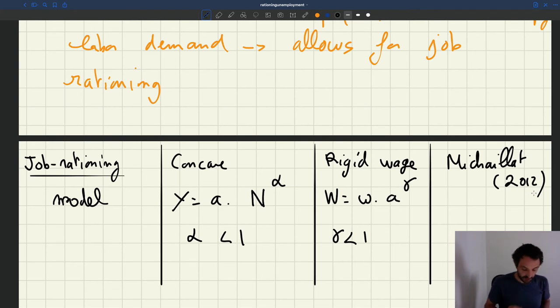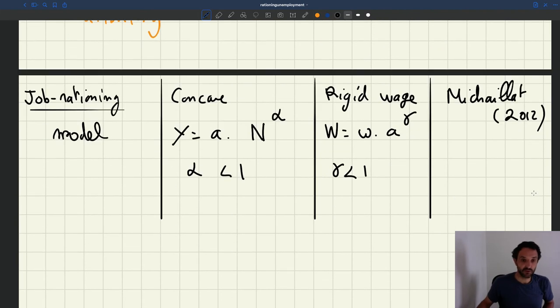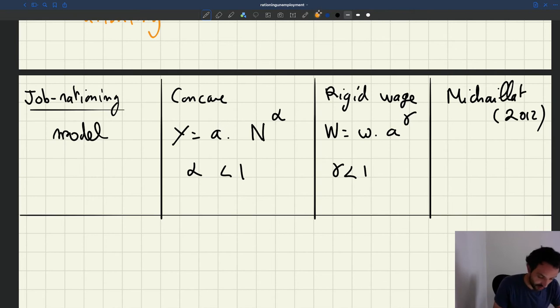In that model, which you can see as a third generation matching model, you have two important and very useful properties.